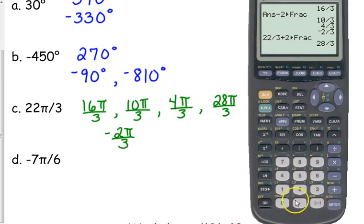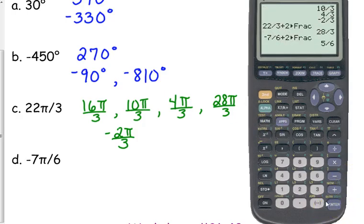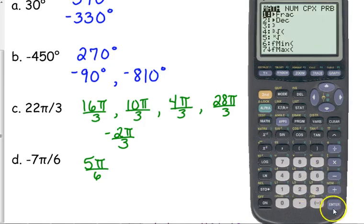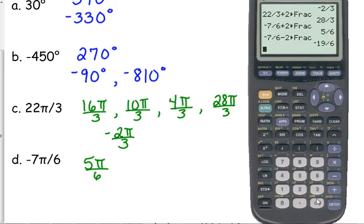One more: negative 7π/6. I know I'll have to add 2 to get a positive — that gives 5π/6. And subtracting 2 gives negative 19π/6 as the negative co-terminal angle.